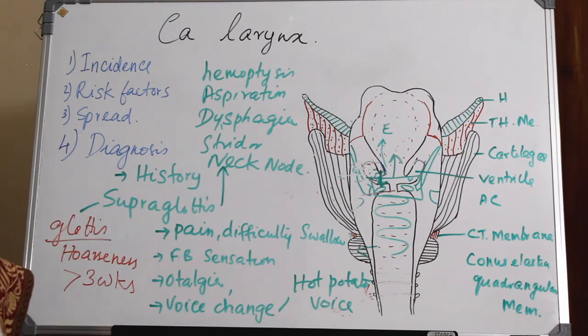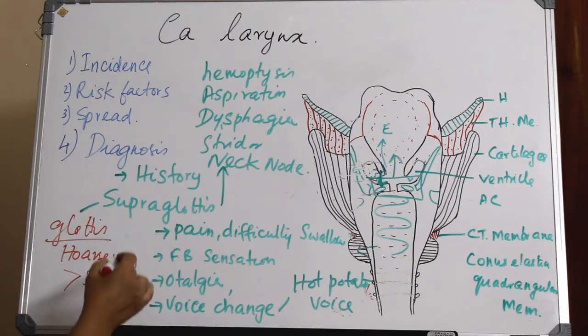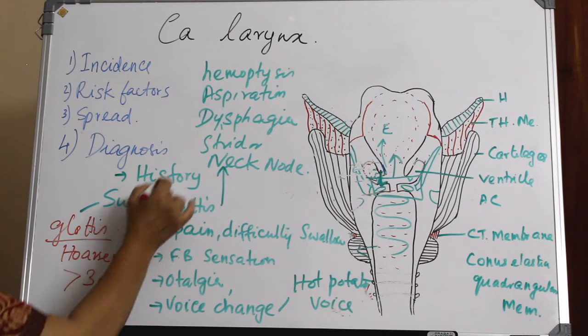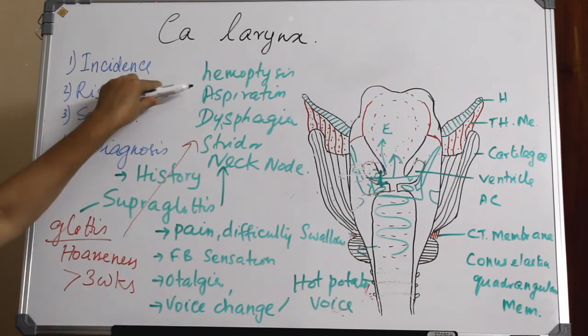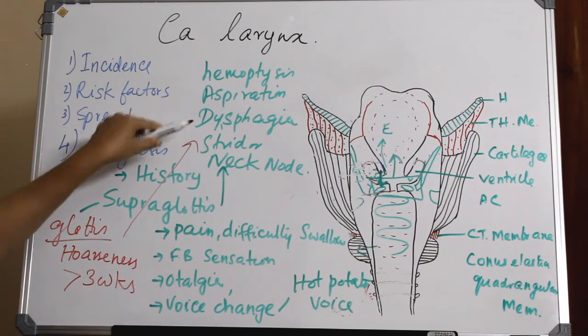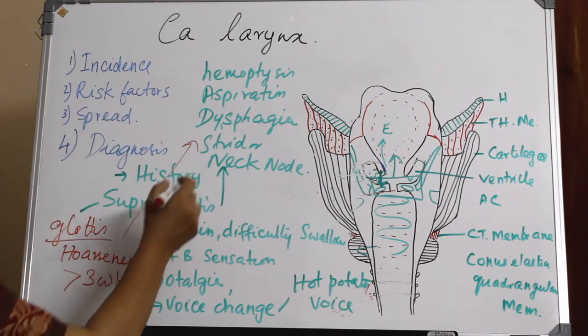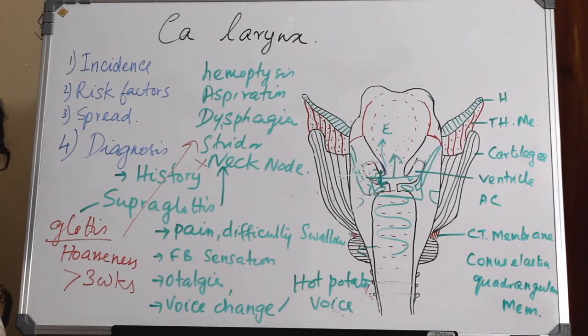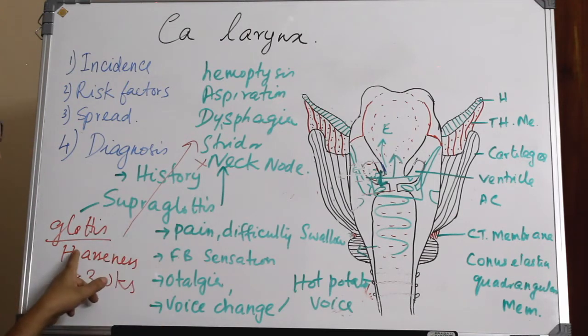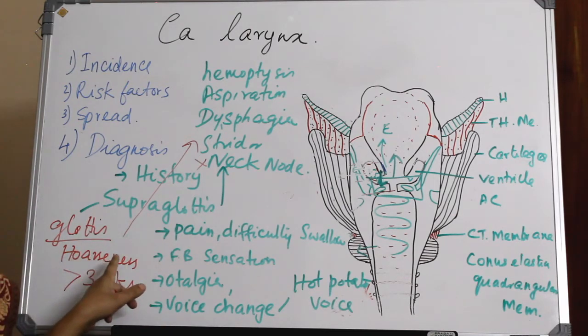In late stages, glottic CA will progress to hemoptysis, aspiration, dysphagia, and stridor. Neck node involvement is the rarest complication that can happen with CA glottis.